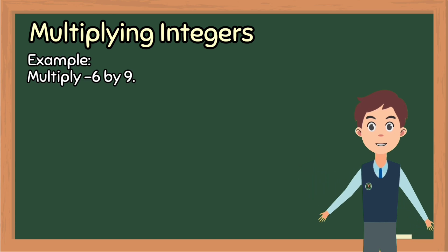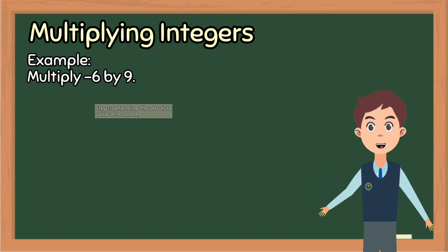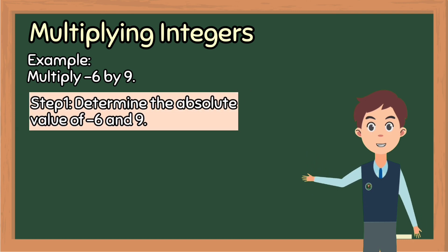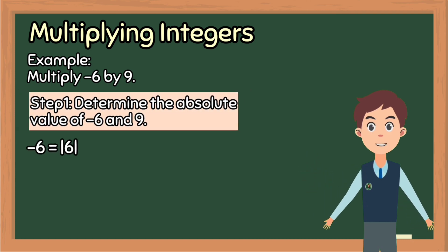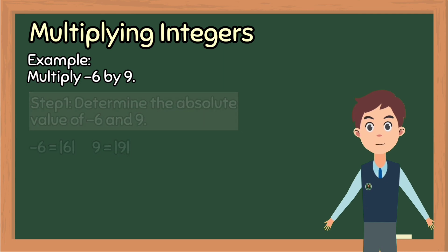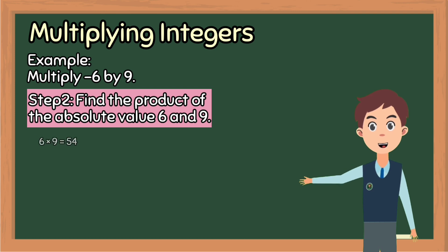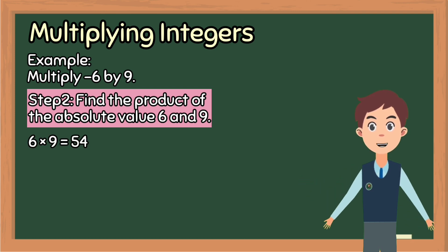Multiply negative 6 and 9. Step 1: determine the absolute value of negative 6 and 9. The absolute value of negative 6 is equal to 6, while positive 9 is equal to 9. Step 2: find the product of the absolute value numbers 6 and 9. So we have 6 times 9 is equal to 54.